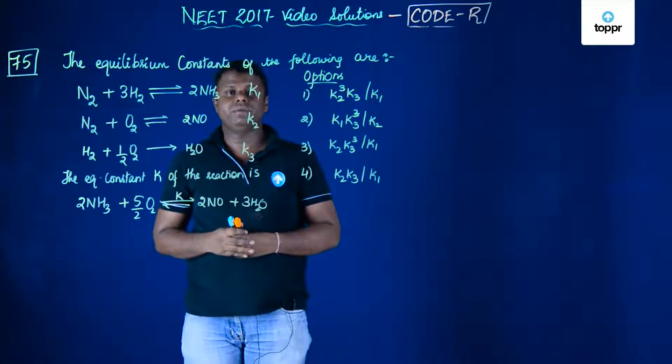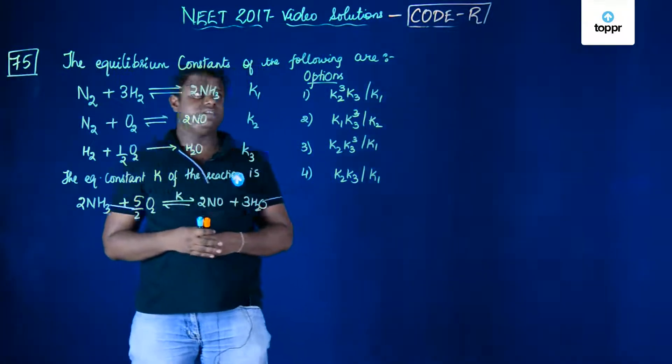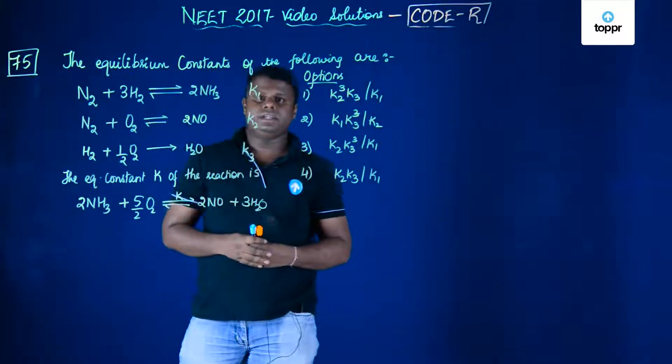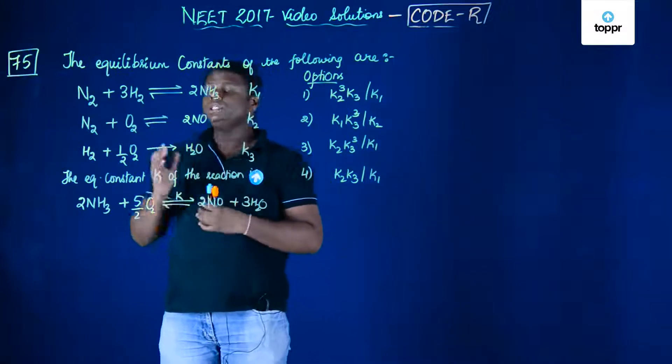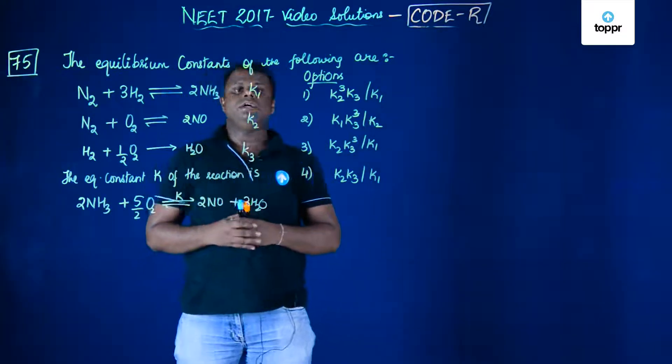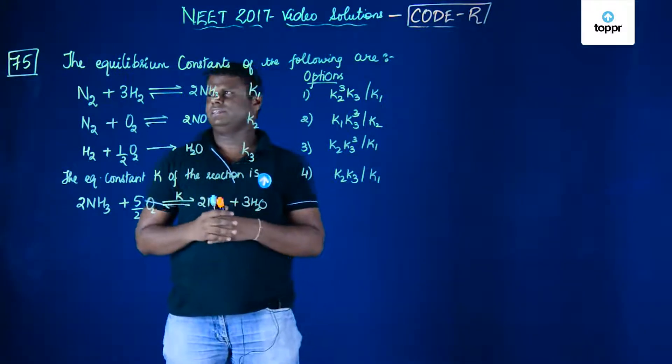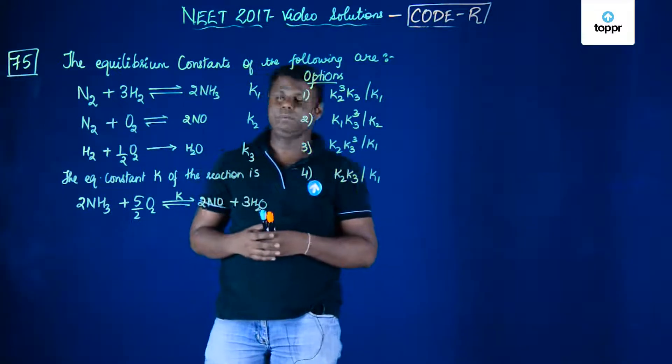Now let's move on to question number 75 of NEET 2017 video solutions, code R. This question is from the equilibrium chapter, that is chemical equilibrium basically.